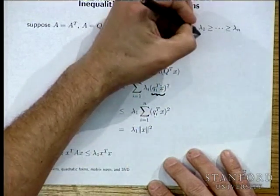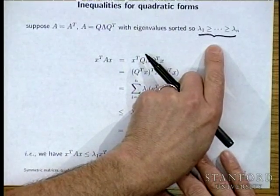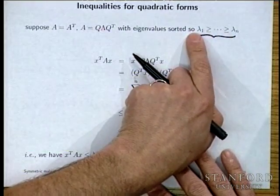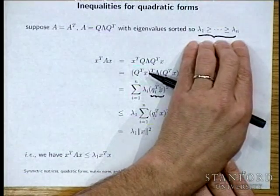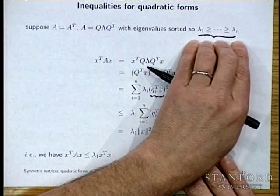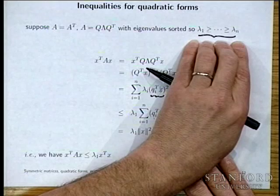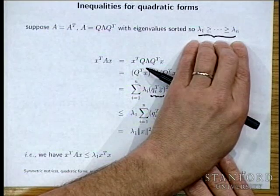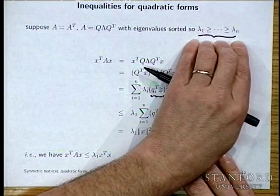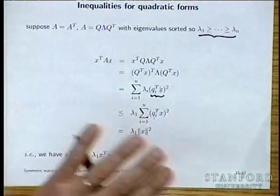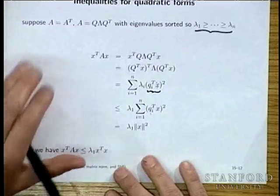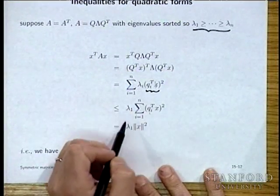Warning: some fields count eigenvalues the other way, with lambda_1 being the smallest. This convention is used in physics (where lambdas are energies and lambda_1 is the ground state) and in Markov chains. Normally we sort them largest to smallest here, but you may need to ask in a new context.